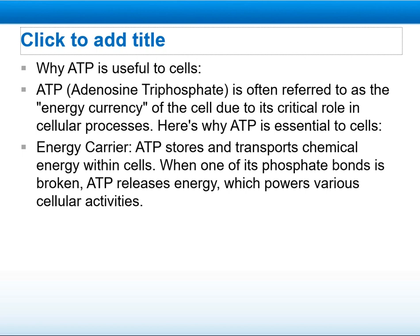Firstly, why is ATP useful to cells? ATP is often referred to as the energy currency of the cell due to its critical role in cellular processes. ATP is an energy carrier — it stores and transports chemical energy within cells. When one of its phosphate bonds is broken, ATP releases energy which powers various cellular activities.